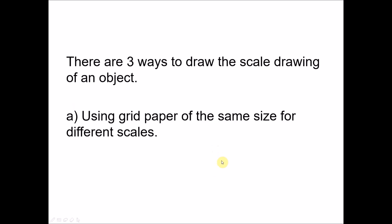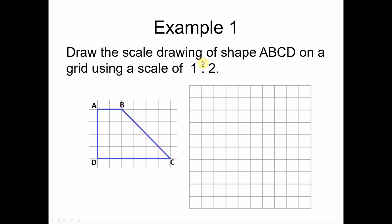There are three ways to draw a scale drawing of an object. The first way is using a grid paper of the same size for different scales. For example, draw the scale drawing of shape ABCD, a trapezoid, on a grid using a scale of 1 is to 2. Notice that the grid size is the same, but we draw using a scale of 1 is to 2. The 1 represents 1 unit of the scale drawing, and the 2 represents the object.